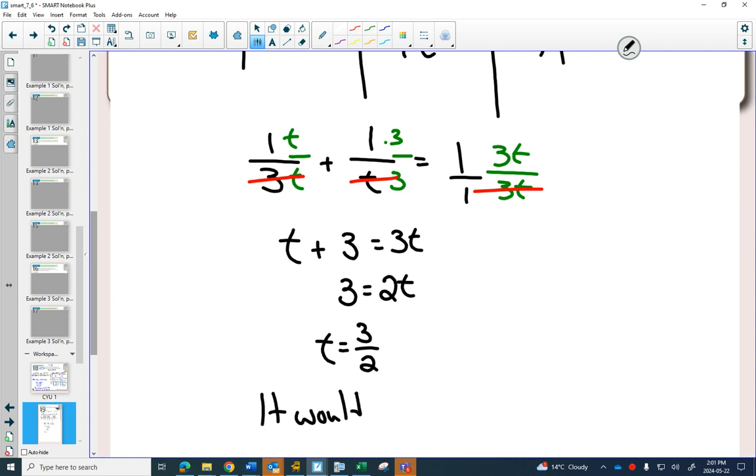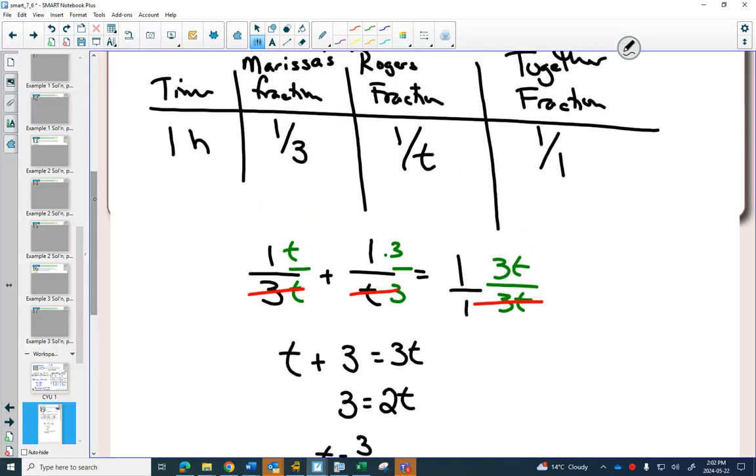The word problem. Three over two is 1.5 hours. On his own. So in our chart, this fraction plus this fraction will always have to equal that fraction.